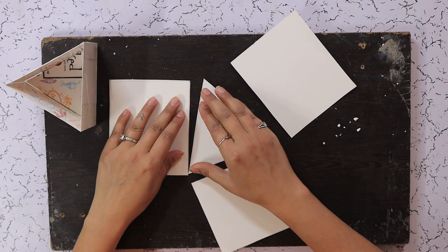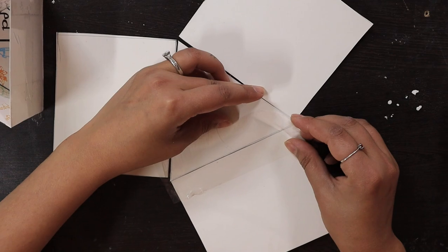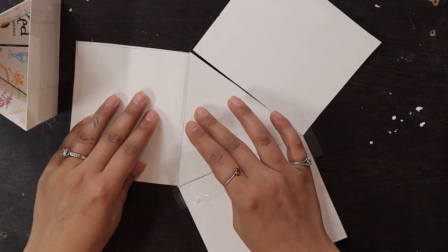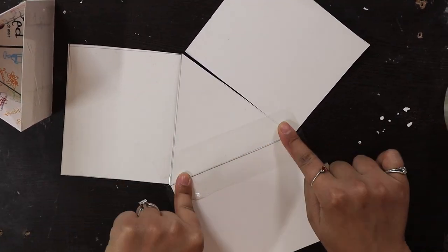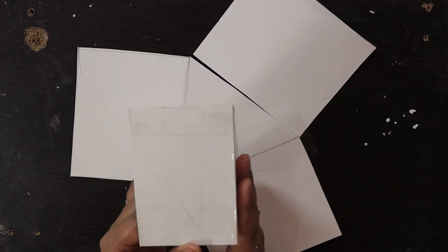So we have all our pieces. We are going to join them like so using tape. We are going to tape all our sides like this and then we are going to cover it up with more tape.